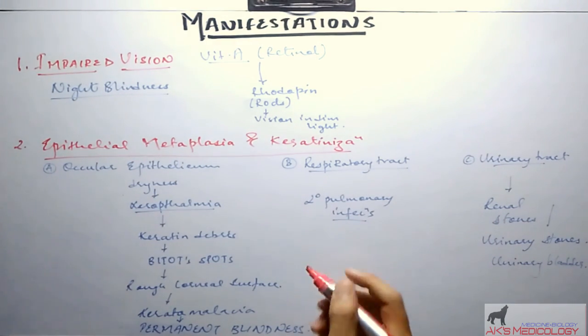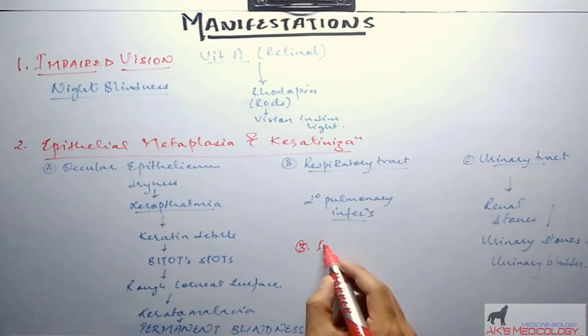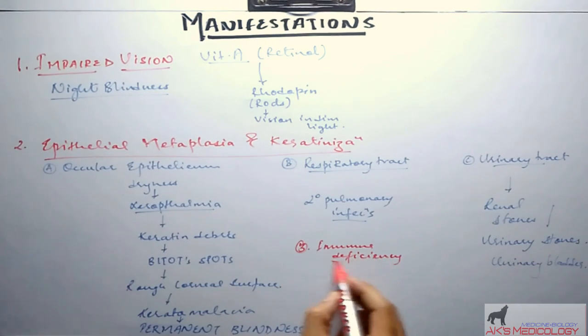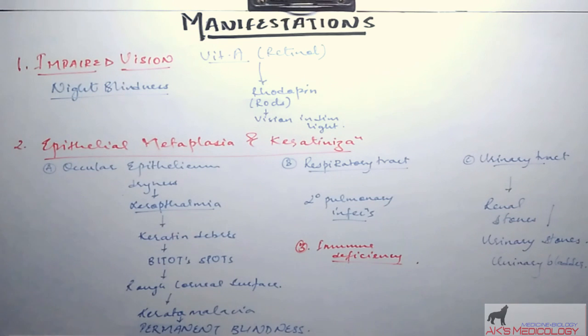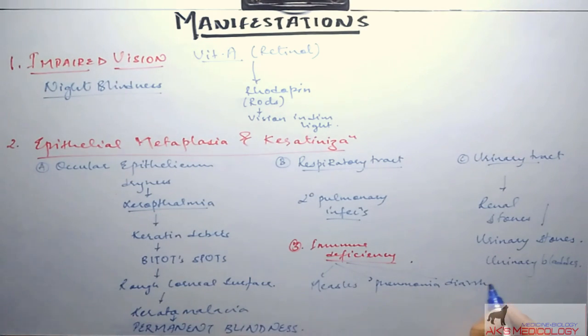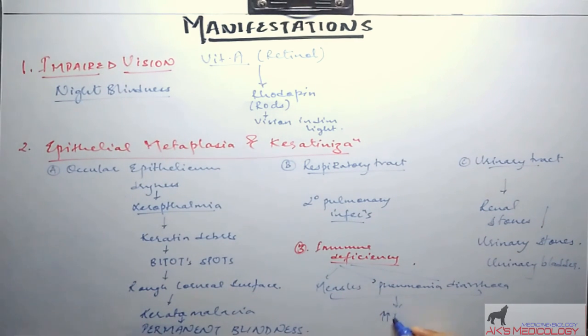Another important manifestation or the later manifestation is immune deficiency. As vitamin A is also an antioxidant vitamin, it is responsible for the formation of immune products inside our body. Deficient vitamin A might result in immune deficiency which might lead to certain diseases like measles, pneumonia, and diarrhea. All these immune deficient reactions result in increased mortality.